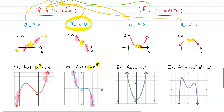Now we move to even exponents. Example 3 has a highest exponent of 2 and a leading coefficient of 3, which is positive. The rule says the function rises to the left and rises to the right — and that is exactly what this function does.